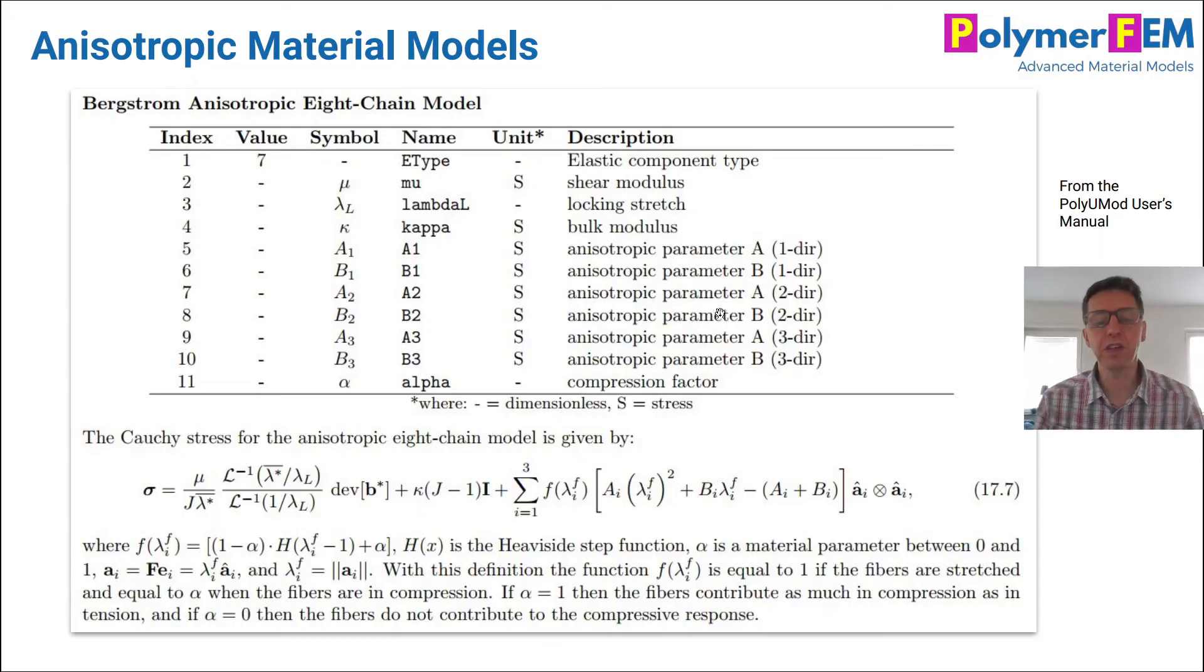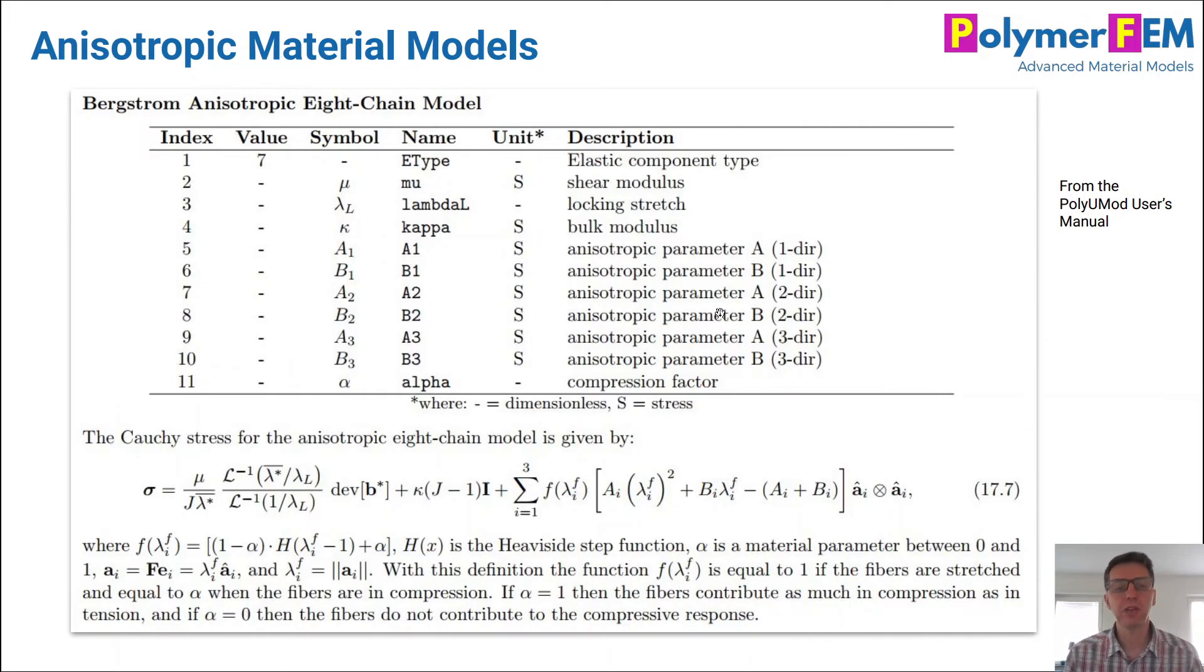So let's do a quick demo of how this would work in practice. I'm picking a material that I developed a few years ago. This is the Bergstrom-Boyce anisotropic 8-chain model. It has a stress function that's shown at the bottom here. This is the basic Arruda-Boyce 8-chain model with one more term that gives you stiffness in three orthogonal fiber directions. So A and B parameters give you the stiffness parameters in these three orthogonal directions.